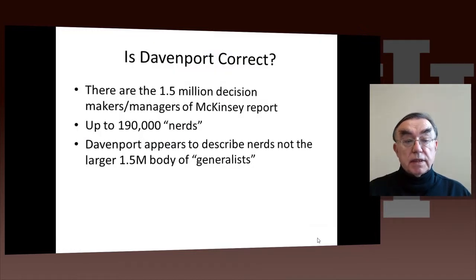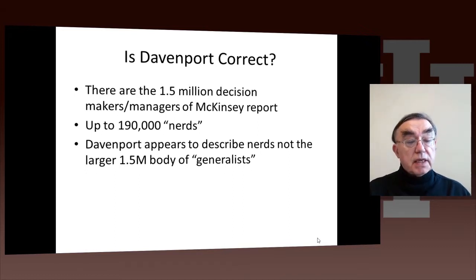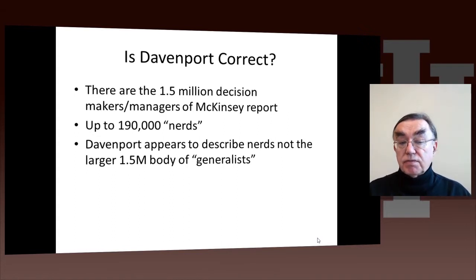The first comment is that if you remember the McKinsey report on data science, it identified a set of 1.5 million decision-makers and managers, and 190,000 nerds. So I would say Davenport's characterization is really for the nerds, not for the generalists — the larger 1.5 million. And the 1.5 million is roughly the target of this particular class.